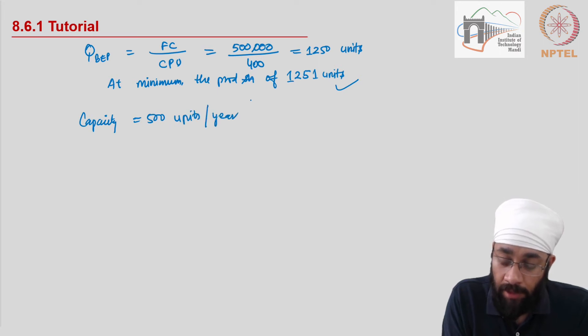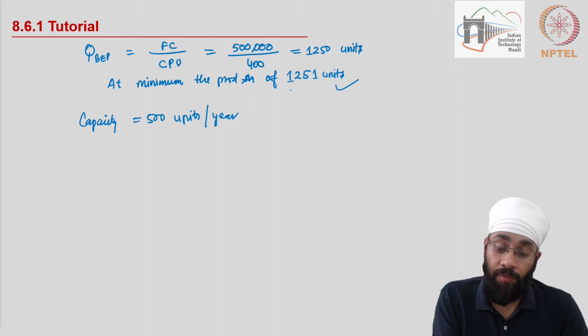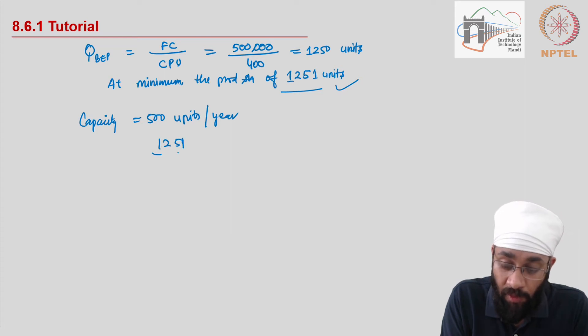Now in order to break even you have to produce 1,251 units, which means that you will have to go on for more than one year. So how many more is what we're going to figure out now.